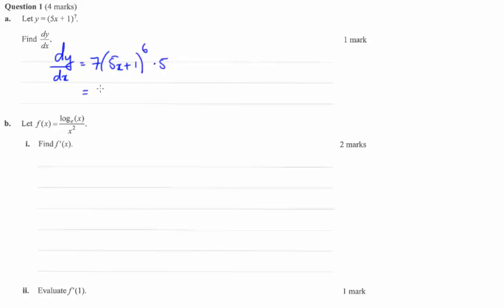times by the derivative of the inside. You should get 35 times the quantity 5x plus 1 to the power of 6. That would be your one mark.